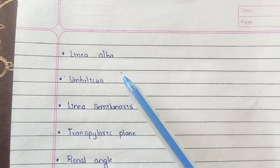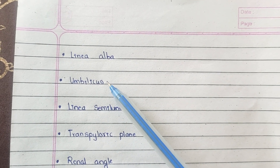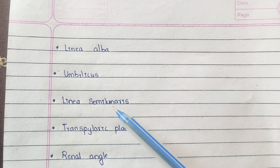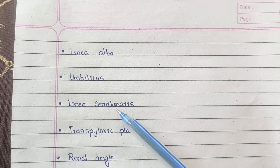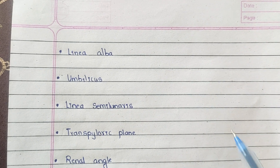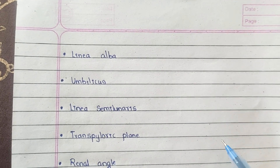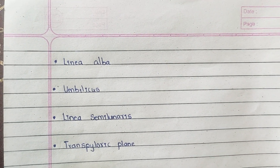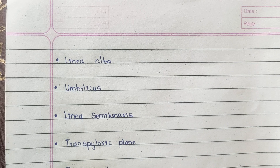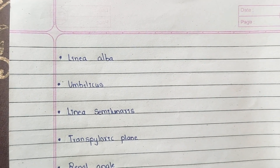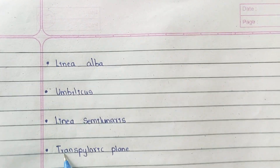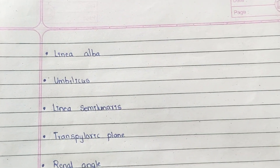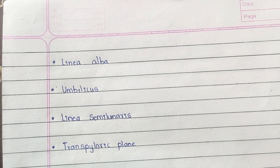During intrauterine life, the exchange of nutrients takes place through the umbilicus between mother and fetus. The linea semilunaris is a curved vertical groove lateral to the median furrow, which extends above to the tip of the ninth costal cartilage and below to the pubic tubercle.